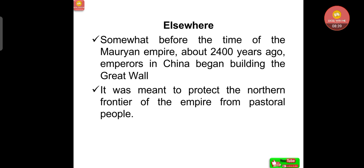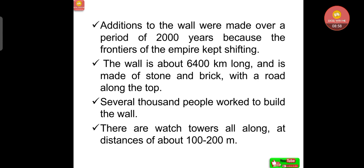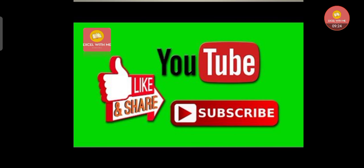Somewhat before the time of the Mauryan Empire, about 2400 years ago, emperors in China began building the Great Wall of China — one of the wonders of the world. It was meant to protect the northern frontier of the empire from pastoral people. Additions to the wall were made over a period of 2000 years as the frontiers of the empire kept shifting. The wall is about 6400 km long and is made of stone and brick with a road along the top. Several thousand people worked to build it, and there are watchtowers all along at distances of about 100 to 200 meters.